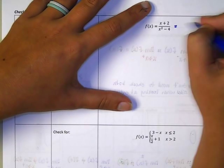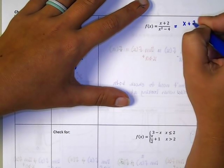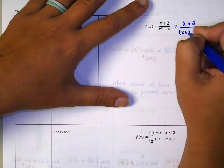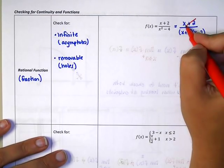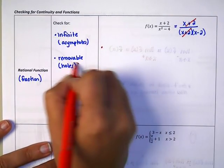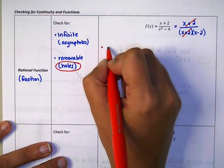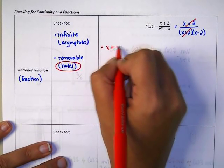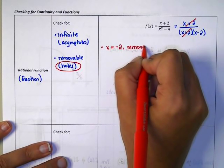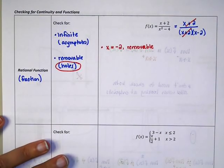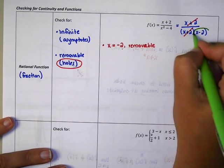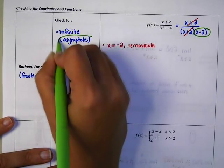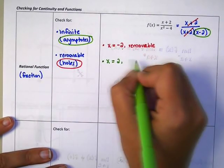Step one for a rational function is to factor. If I factor, I get X plus 2 on top divided by X plus 2 times X minus 2 on the bottom. The X plus 2s cancel, which tells me there's a hole — a discontinuity at X equals negative 2 that is a removable discontinuity. The part of the denominator that did not cancel, X minus 2, tells me there's an asymptote, so X equals 2 is an infinite discontinuity.